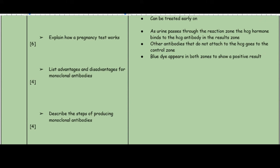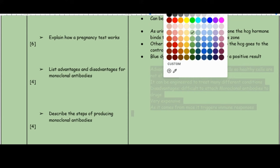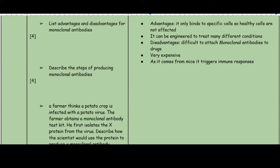List some advantages and disadvantages of monoclonal antibodies. Advantages: they only bind to specific cells so healthy cells are not affected, and they can be engineered to treat many different types of conditions. Disadvantages: it is difficult to attach antibodies to drugs, they are very expensive, and as they come from mice they could trigger immune responses.